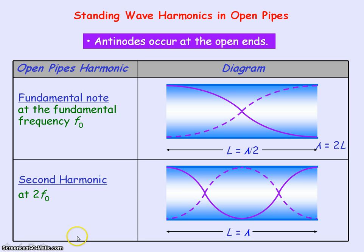The standing wave for the third harmonic will be vibrating at three times f₀, where the length of the pipe equals one and a half wavelengths, and so on for the other harmonics.